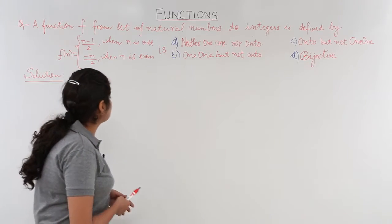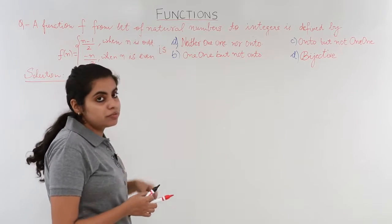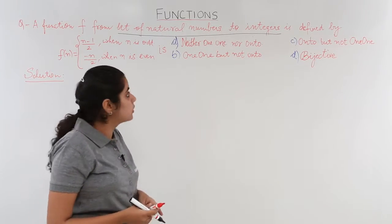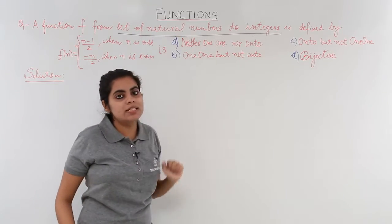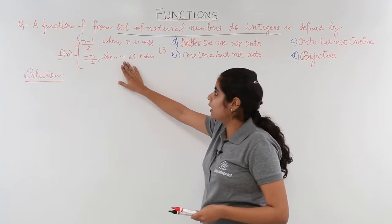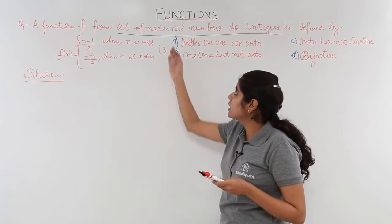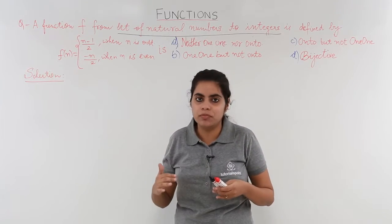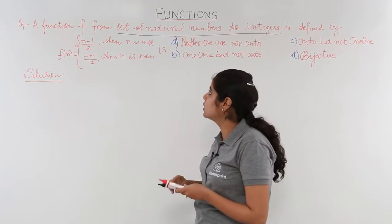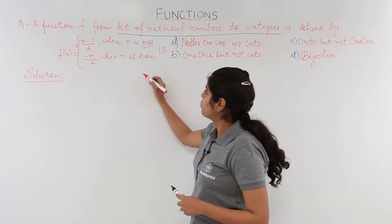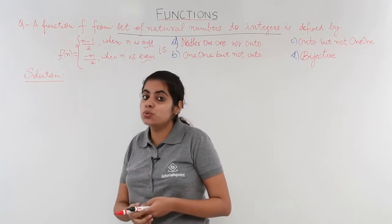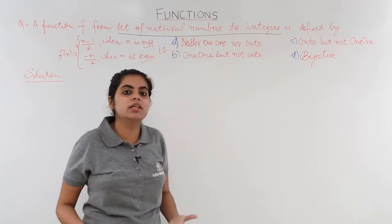Let's see this question now. There is a function f from the set of natural numbers to integers. So the domain is natural numbers and the co-domain is integers. It is defined as: f(n) = (n-1)/2 for odd numbers, and f(n) = -n/2 for even numbers. Natural numbers start from 1, 2, 3 and so on, so there are two categories — even and odd — and the function definition is split accordingly. We need to check whether this function is bijective or not.